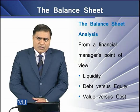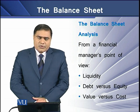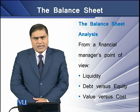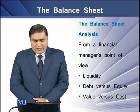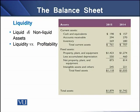When going for a balance sheet analysis, a financial analyst looks into three types of analysis: liquidity, debt and equity, and value versus cost. Liquidity means a firm's easiness and ability to pay its debt when it becomes due. A firm's assets can be divided into two parts: liquid assets and non-liquid assets. Liquid assets can be converted into cash without losing their value. The most liquid current asset a firm can have is cash, the second is accounts receivable, and the least liquid is inventory, which takes much time to be liquidated into cash.